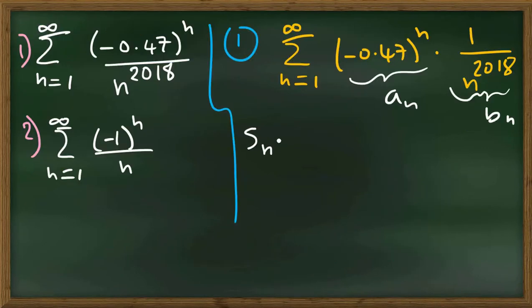The partial sum S_n is the sum when k goes from 1 to n of A_k. But A_k is minus 0.47 to the power k. Now, this is a geometric sequence, minus 0.47 to the power k.